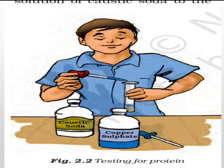In this picture you can see a boy testing a food item for protein. He has taken caustic soda and copper sulphate solution for the protein test.